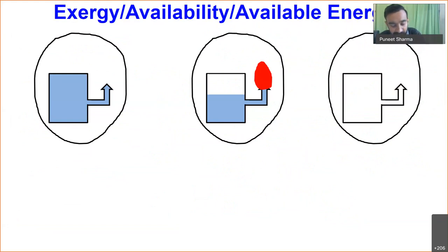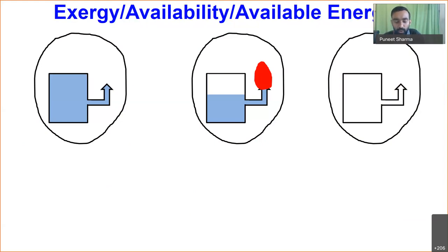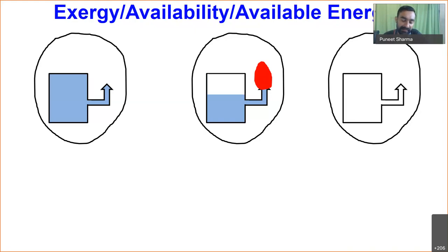We now begin the last topic of our syllabus. Till this moment we are familiar with properties like internal energy, enthalpy, kinetic energy, potential energy, temperature, pressure, volume, etc. We now introduce one more property called exergy, also called availability or available energy. The term 'available energy' was first introduced by the School of Engineering at MIT in 1940, and the term 'exergy' was coined in Europe around 1915.